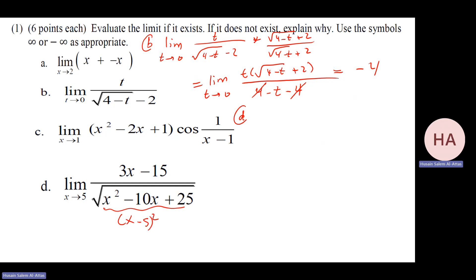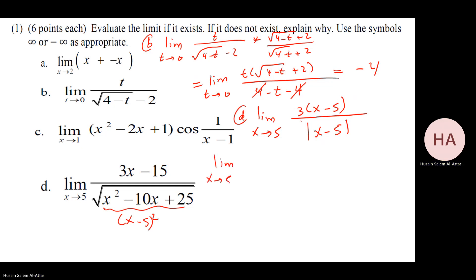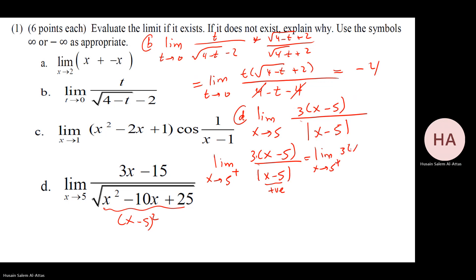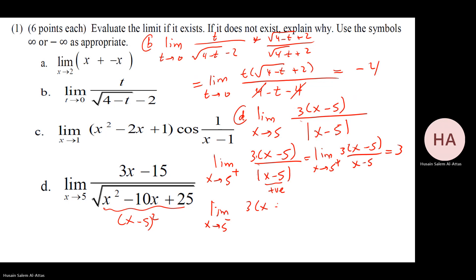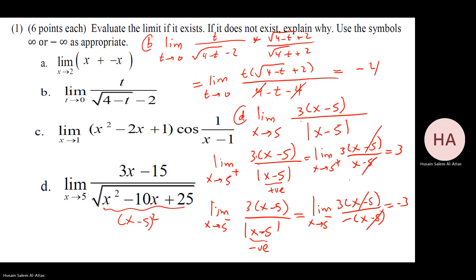Part d: limit as x goes to five of x minus five over the absolute value of x minus five. This is a tricky one — the limit does not exist. Checking from the right: absolute value of x minus five is positive, so you get plus one, answer is three. However, from the left, x minus five is negative so absolute value becomes minus x minus five, giving minus three. Since they differ, the limit does not exist.